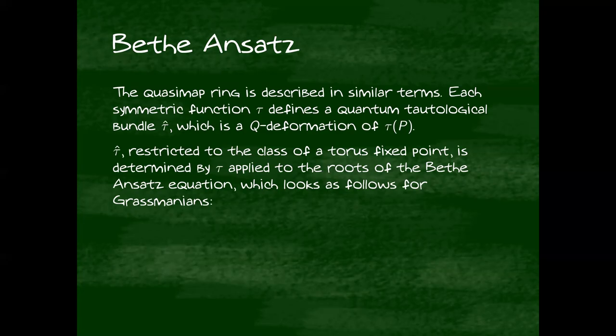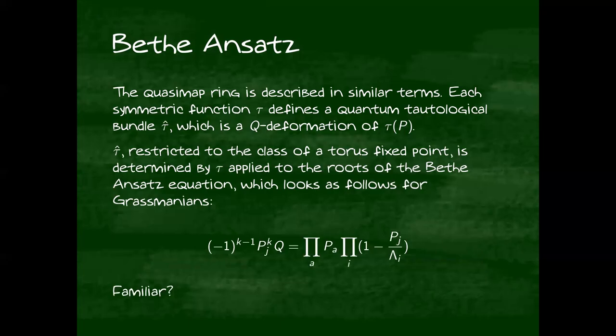Which in this language of quantum integrable systems is the beta-Ansatz equation. And for Grassmannians, it looks as follows. Hopefully this should be familiar. This is the same thing as the Coulomb branch equation. I think this observation has been made by a few people, but it kind of suggests the idea that there's some intrinsic meaning to this equation. It's not super surprising if this were just a relation in the quantum K-ring. Then you'd have two different predictions of the quantum K-ring gives you the same relations. That's not the most surprising thing in the world. But these aren't relations. They're things you use to get relations by some kind of symmetrization. So it's maybe more surprising that you see the same equation in these vastly different contexts.